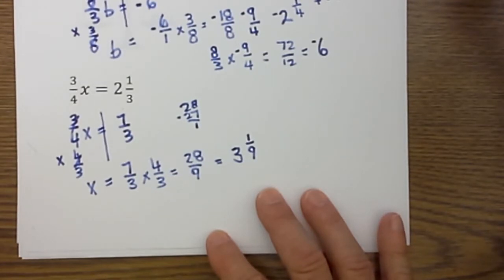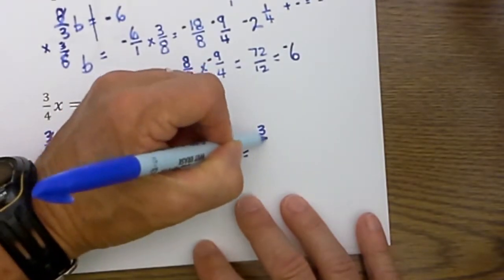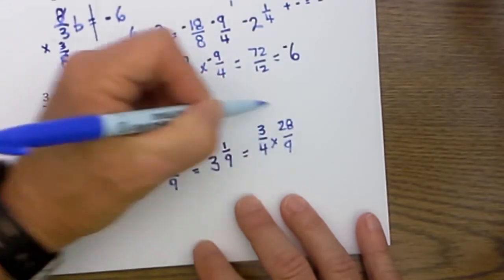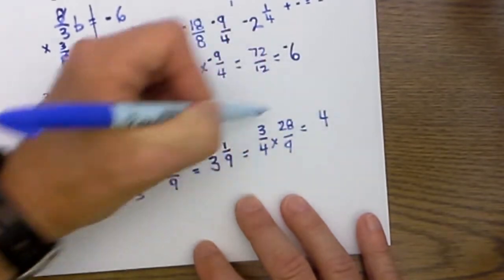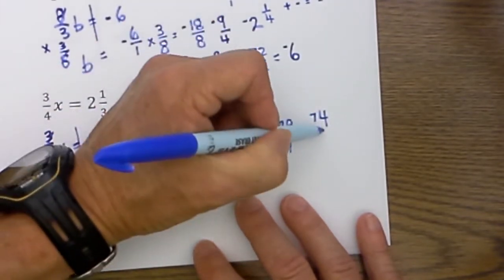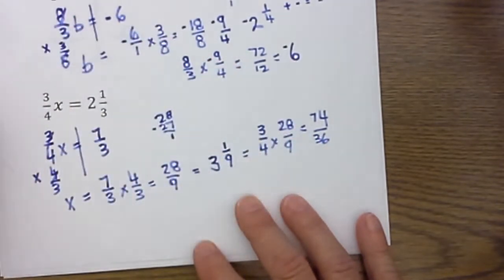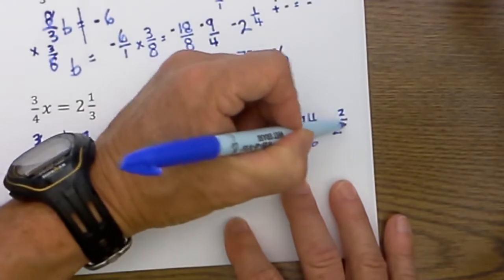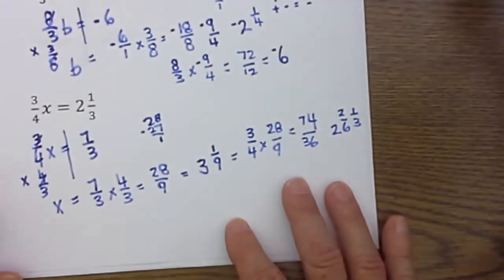So I then need to check my work and so I will go 3/4 times 28 over 9. 3 times 28 is 8, 16, 24, 6 is 74, over 9 times 3 is 36. And 36 will go back. So I will go into 74 two times with a remainder of 2 over 6, and then I can further reduce that to 2 and 1/3. The work does check.